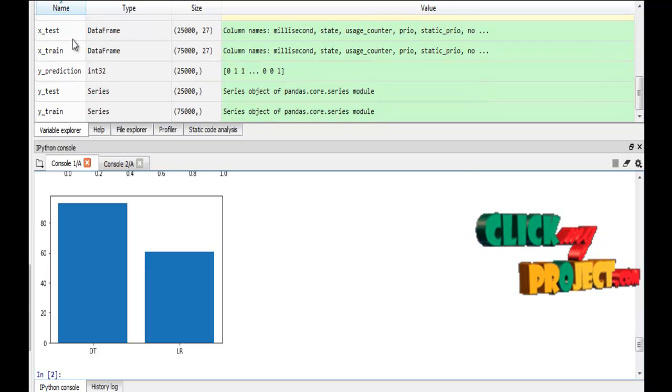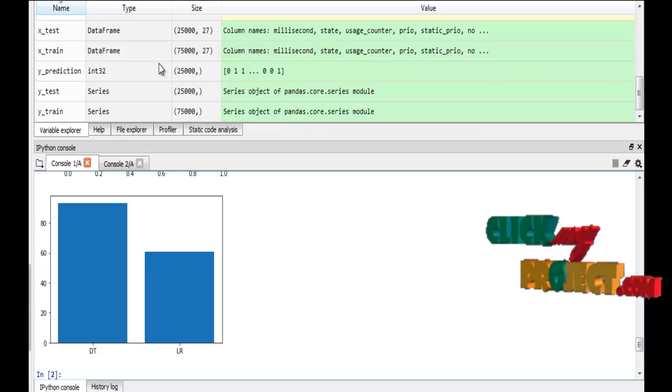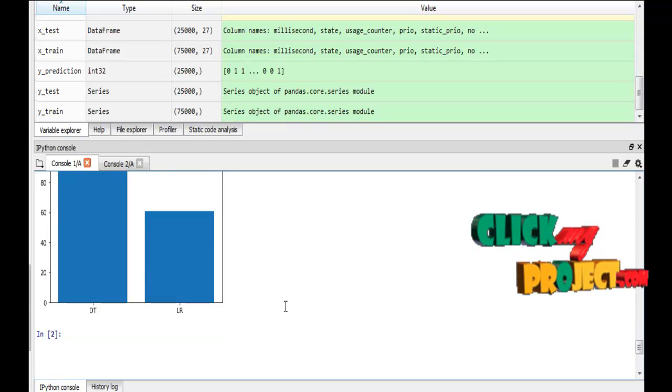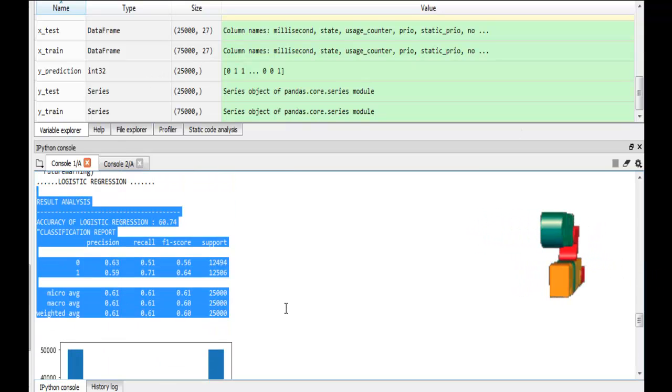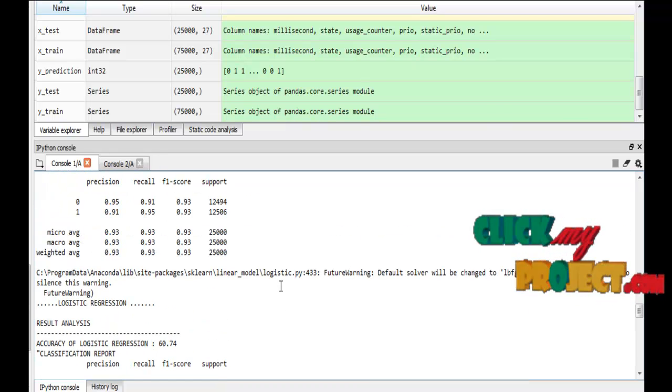This is the variables which are used in programming. This is the variable, its type, and its size for occupying. This is the output for malware detection using machine learning algorithms. Thank you.